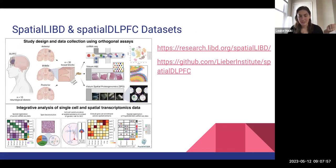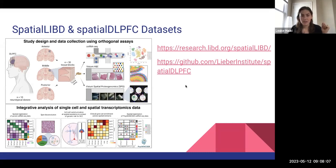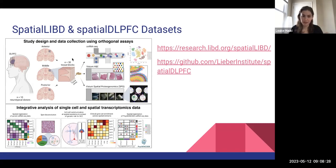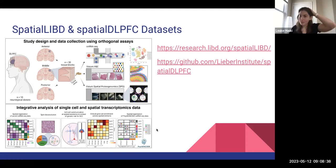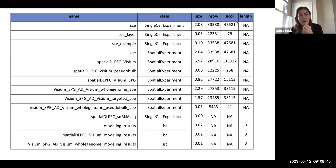We just finished our big spatial DLPFC project and have a very exciting dataset. This also builds off of the spatial LIBD dataset — it's all spatial data out of the human DLPFC. A large arm of this is spatial data, but we also have paired single-nucleus RNA-seq data and Visium Spatial Proteogenomics, which adds more fine-tuned fluorescence imaging data to the spatial data. These are the cool datasets you can access with the spatialLIBD package.